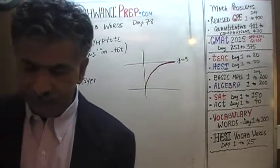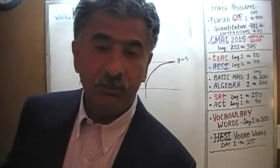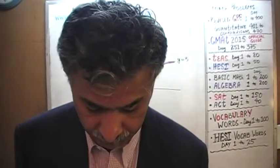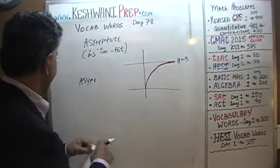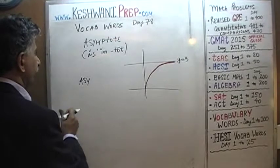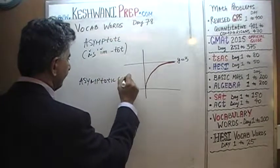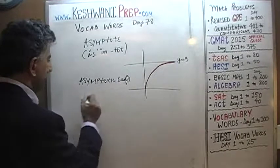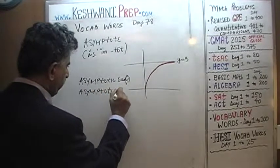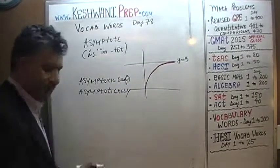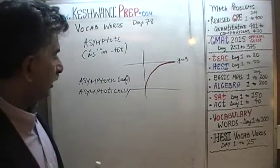We need an adverb. What's the adverb of an asymptote? Asymptote is a noun, and it has an adjective form. Asymptotically was the only reason why we wanted to cover this word.